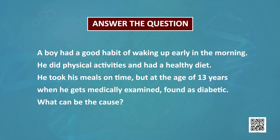Here is a question for all of you: a boy had a good habit of waking early in the morning, doing physical activities, and maintaining a healthy diet. He used to take his meals on time, but at the age of 13 when examined medically he was found to be diabetic. What can be the cause? With this question we end the session. Thank you.